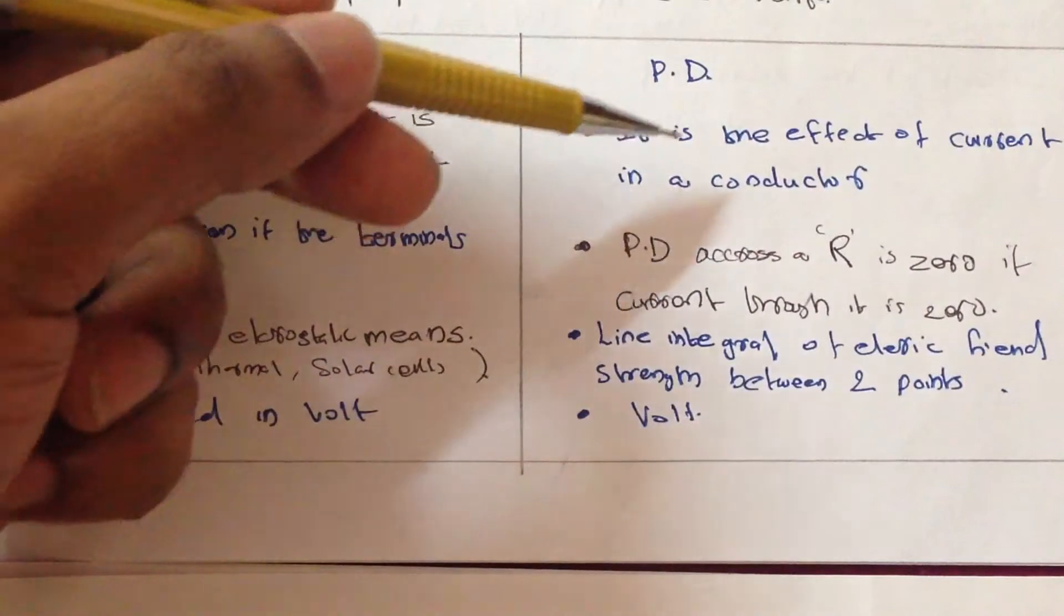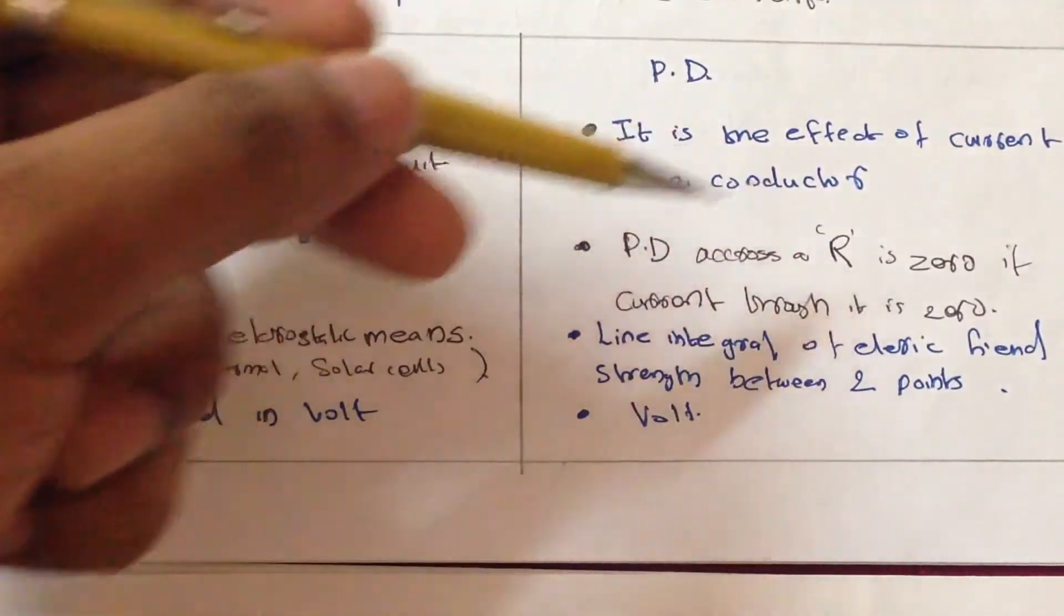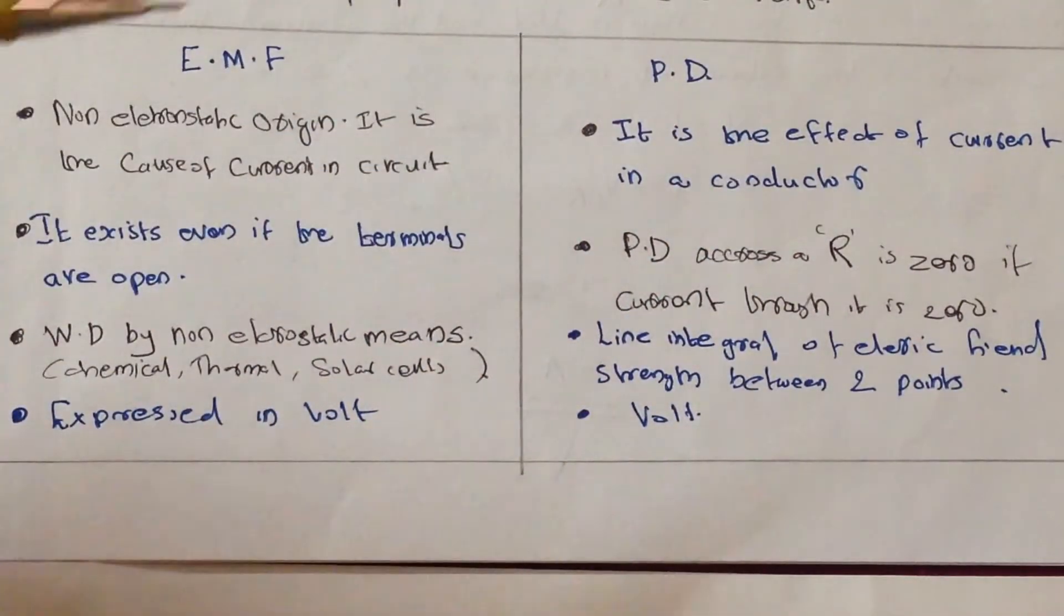Potential difference is the effect of current in a conductor. Potential difference happens whenever a current flows through that particular conductor or thing. Then there is a difference of potential difference that will happen.